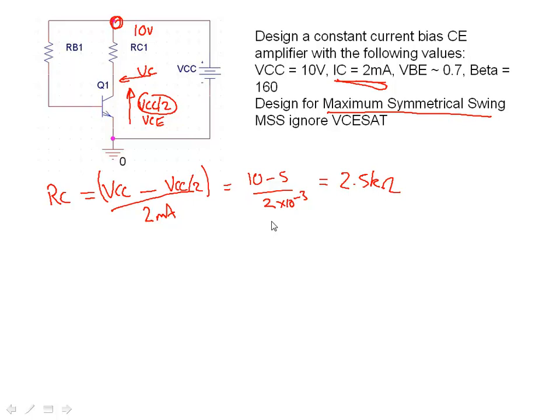There's our first step. We've now actually designed the value of RC. Now let's have a look at the base resistance. The supply voltage is still 10 volts, but what's the voltage at the base at this point? We're going to go with an assumption and we're going to say that VBE is 0.7. The specification says 0.7.